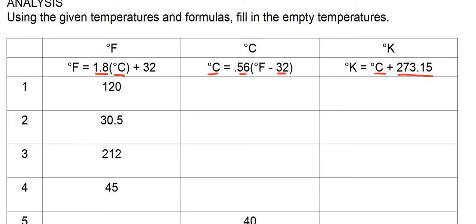We're going to start with 120 degrees Fahrenheit. Since we have degrees Fahrenheit, we use the Centigrade formula. Degrees Centigrade equals 0.56 — which is 5 ninths — multiplied by our degrees Fahrenheit, which is 120, minus 32.